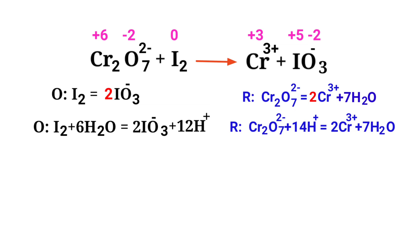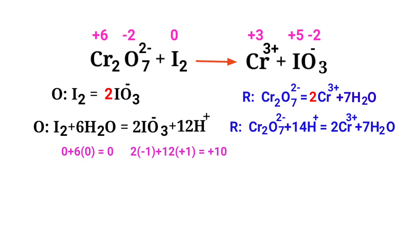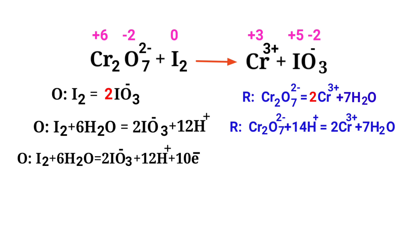For a redox reaction, the sum of charges must be equal on both sides. In the oxidation half reaction, both sides are not equal. You should add electrons — not protons — to balance charges. Adding 10 electrons to the right side makes it equal to 0. Now the charges are equal in the oxidation half reaction.